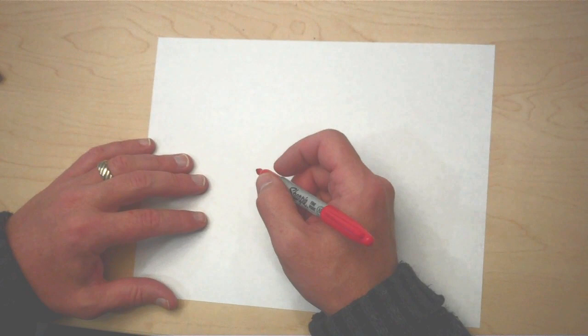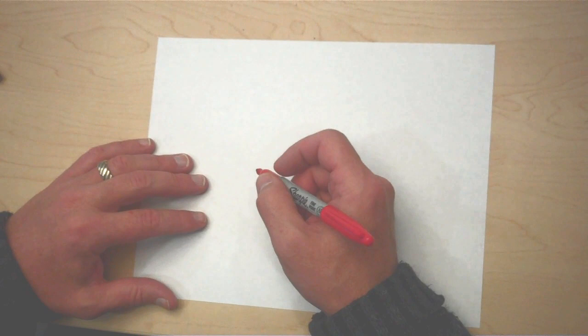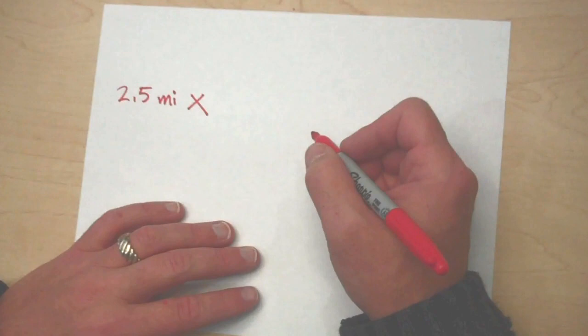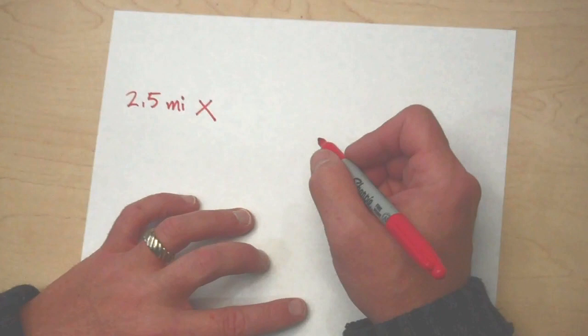So let's go ahead and set up the problem for our final calculations. We start with 2.5 miles. And to convert, we're going to multiply it by a conversion factor. Should it be one mile in 5,280 feet? Or 5,280 feet in one mile?